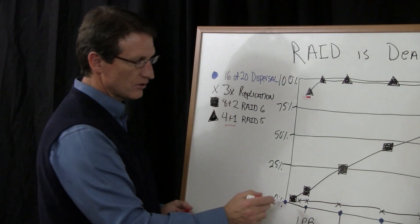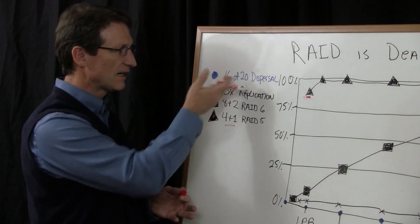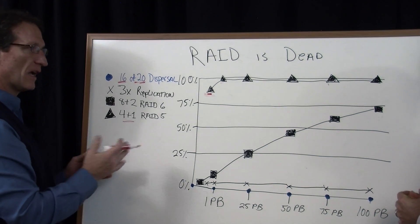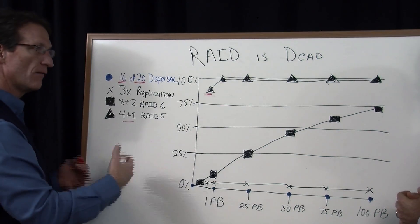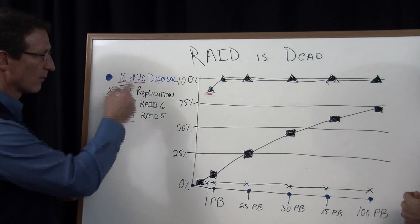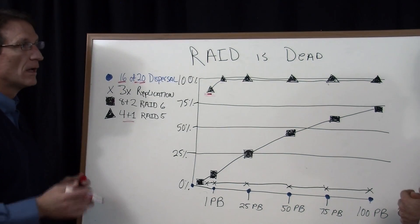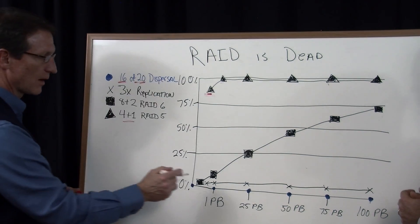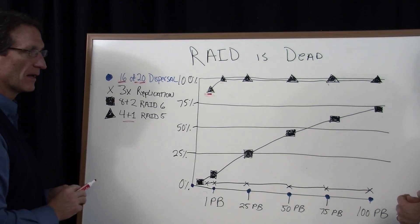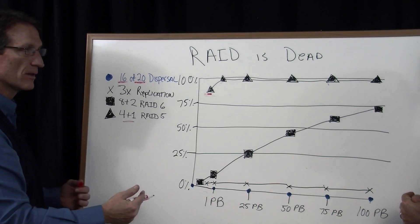So as you start at a petabyte and then grow up to 100 petabytes, the chances of data loss in a typical dispersal system, and we're showing here a 16 of 20, meaning I need 16 pieces of my original data, I'm going to create 20, I need any 16 of those 20 to put it back in its original form. The chances of data loss in that configuration, even at 100 petabytes, are zero. That is significantly more reliable than even three copies of your data. And really with dispersal, you're storing one instance of the data plus a little bit of overhead associated with the dispersal algorithms themselves.